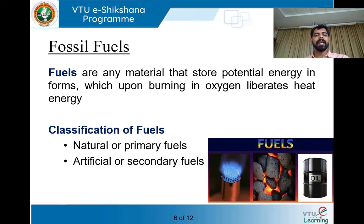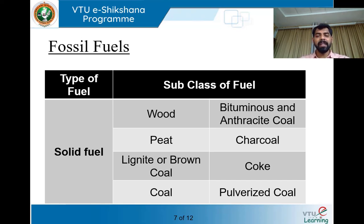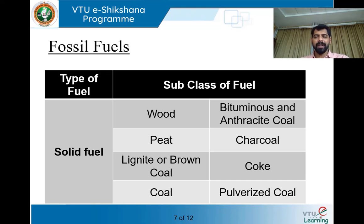Let us discuss the formation of natural fuels, starting with solid fuel. Naturally available solid fuels include wood and coal, generally called charcoal. These coals are available in three grades depending on quality: the lowest grade is peat, the moderate grade is bituminous coal, and the finest, highest grade is anthracite. Apart from coal, wood is also a naturally available solid fuel which has been used for ages. So how is coal formed?